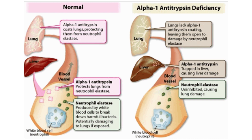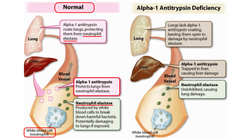This diagram shows the normal scenario where alpha-1 antitrypsin protects the lung from neutrophil elastase. The neutrophil elastase is produced by white blood cells to remove harmful bacteria — that's its initial purpose — but if alpha-1 antitrypsin isn't present, it can start damaging the lung tissue itself.